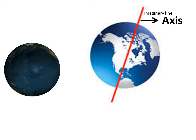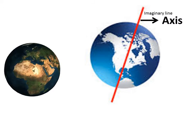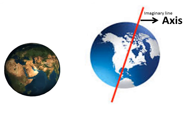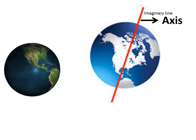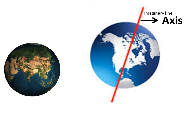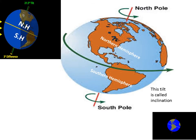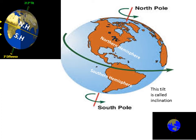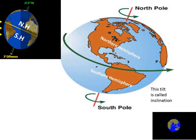As we all know, earth is spherical in shape and there is an imaginary line that runs through the earth from top to bottom. This is known as axis. The axis of the earth is slightly tilted — it is not vertical. Therefore, the earth is always inclined on one side while moving around the sun. This tilt in the earth's axis is known as inclination, meaning a slight disposition.